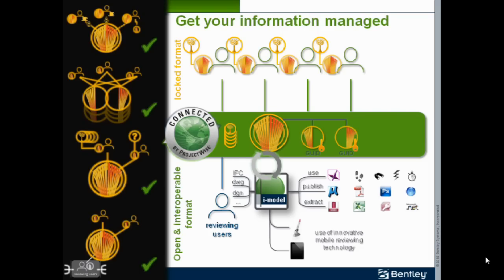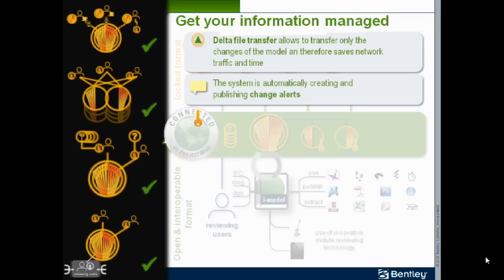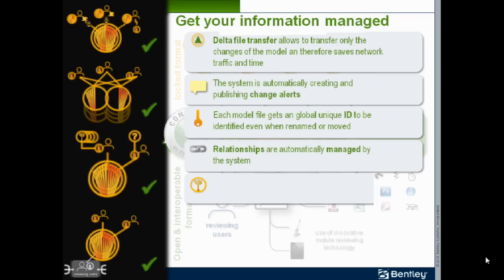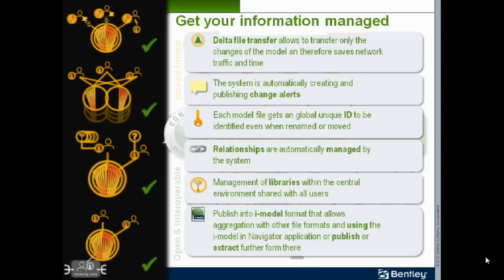Let me sum up our offering here. We talked about Delta File Transfer technology, saving you a lot of time when synchronizing your model. We talked about change alerts to ensure everybody stays up to date with the model information. We talked about global unique IDs to ensure you can reach out for every linked information, even so it might get renamed or moved. And we talked about keeping the relationship managed in that environment and automatically publishing all the linked information to the user requesting an information model. We talked about the management of standards and libraries within the managed environment. And we talked about publishing into an iModel format, which is a very, very interoperable format, allows you to run clash detection, schedule simulation, and use that format to publish in other formats like 3D PDF or even to extract data by using an ODBC interface.